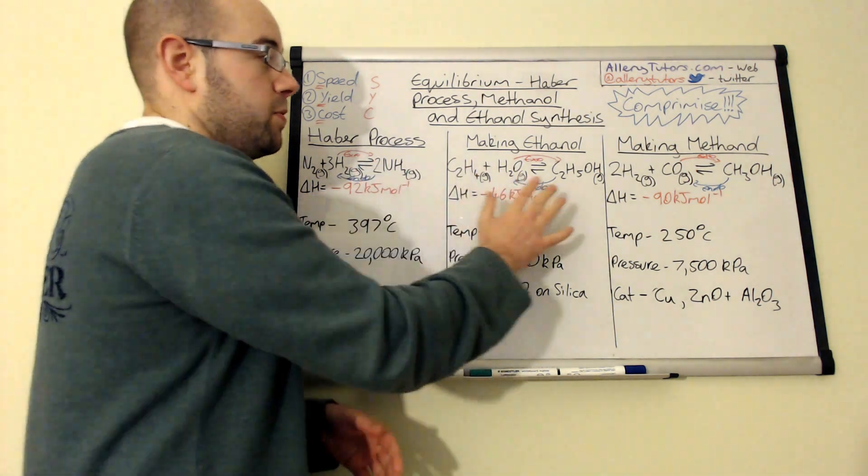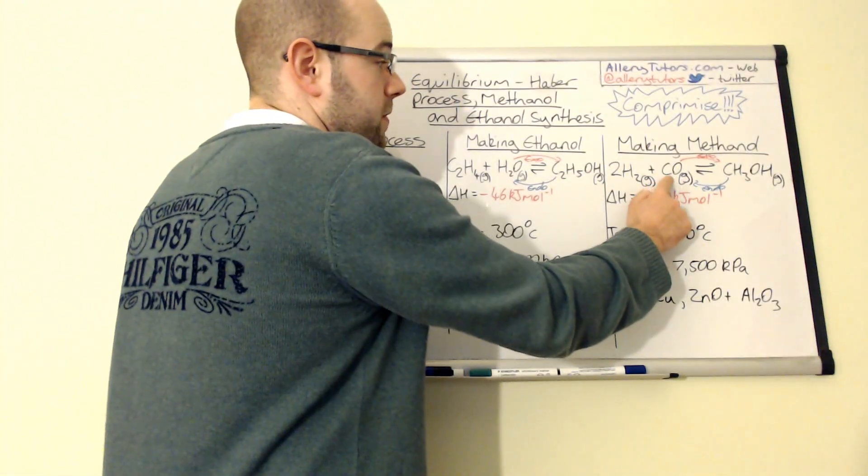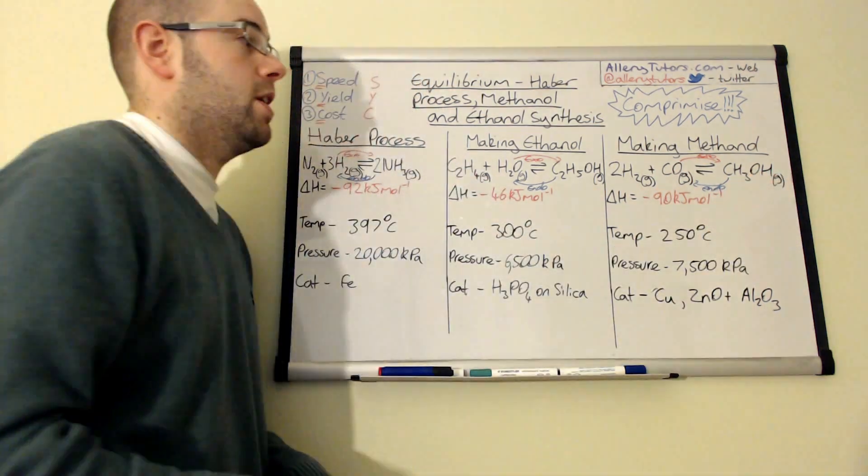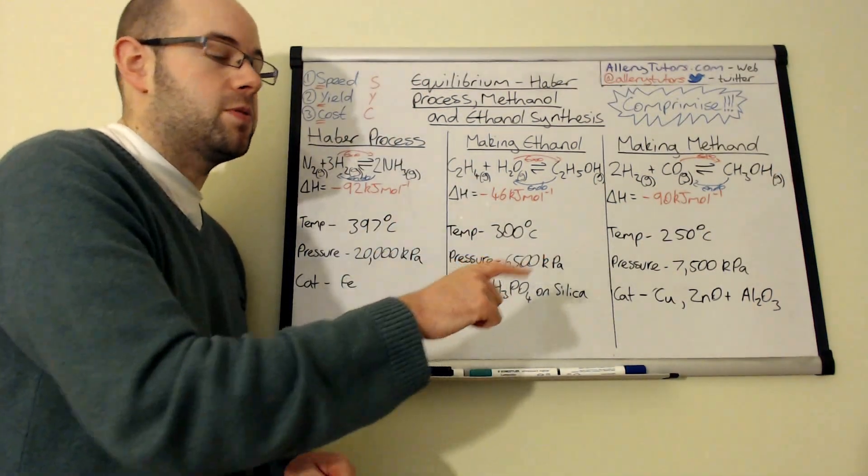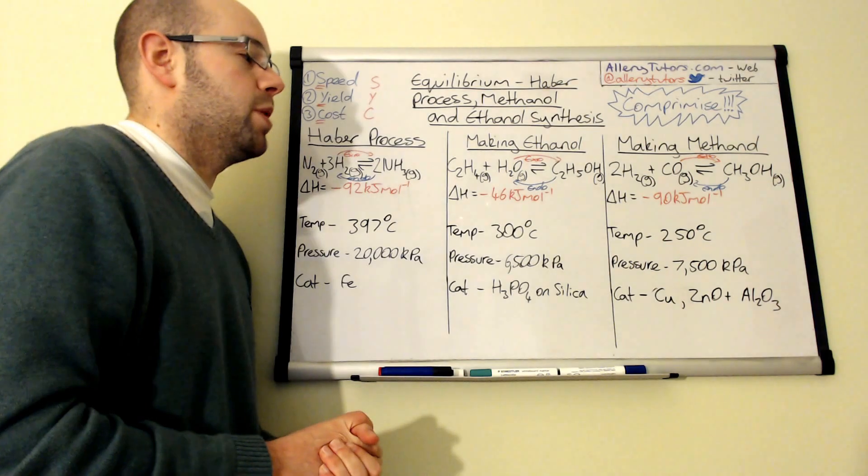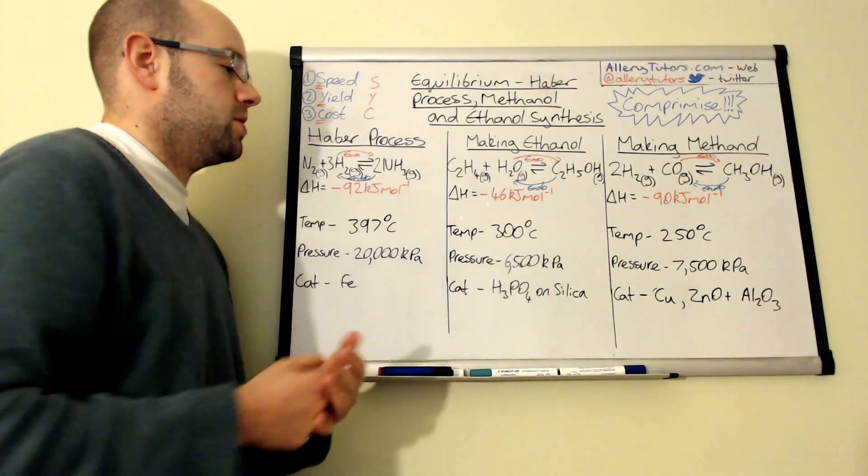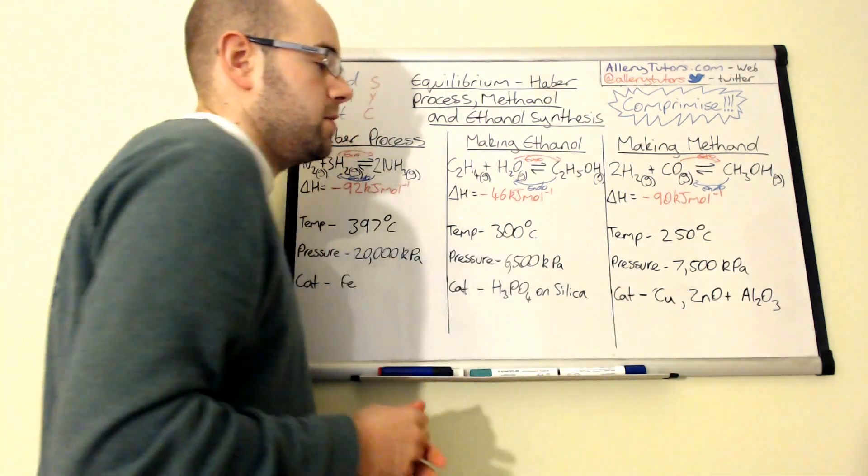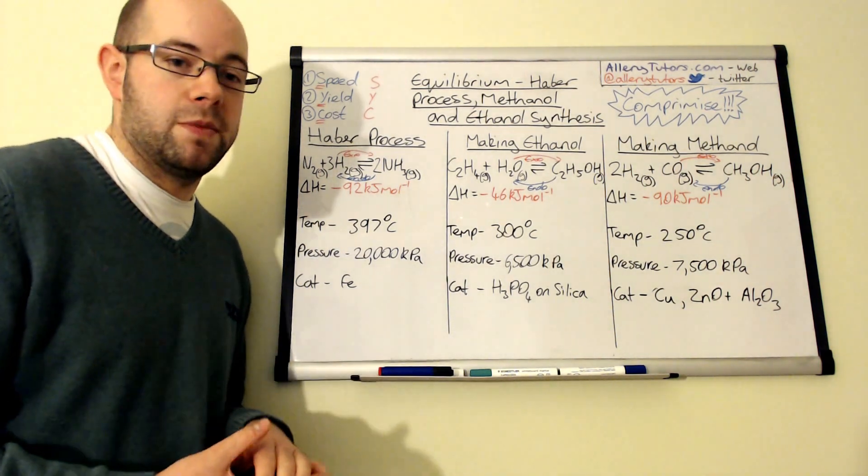The pressure is 7500 kilopascals. Again, for the same reasons as before, we've got three moles of gas on the left, one mole of gas on the right. Increasing the pressure shifts equilibrium to the right, but again you've got the cost implication. The catalyst we use here is copper, a mixture of copper, zinc oxide, and aluminum oxide as well.